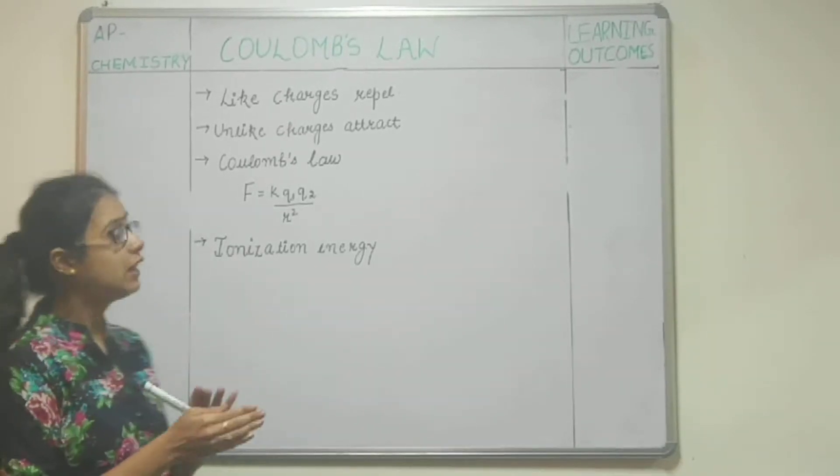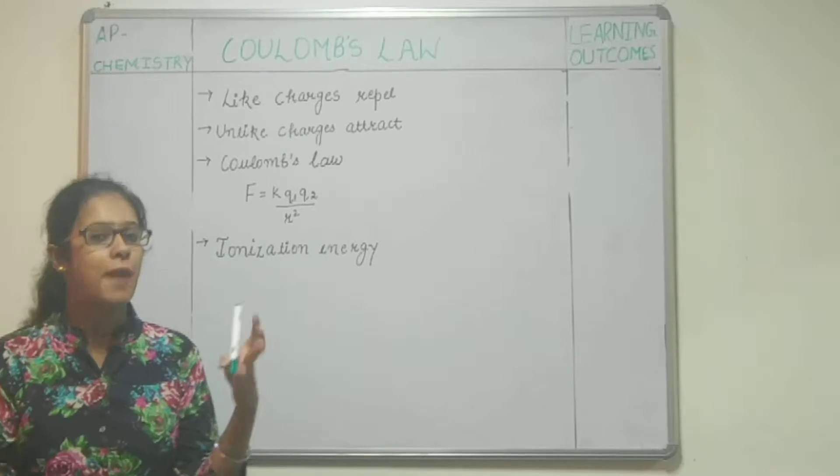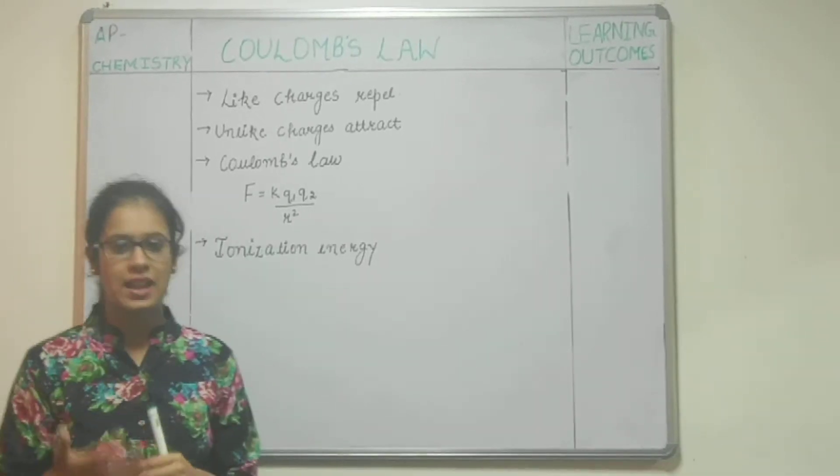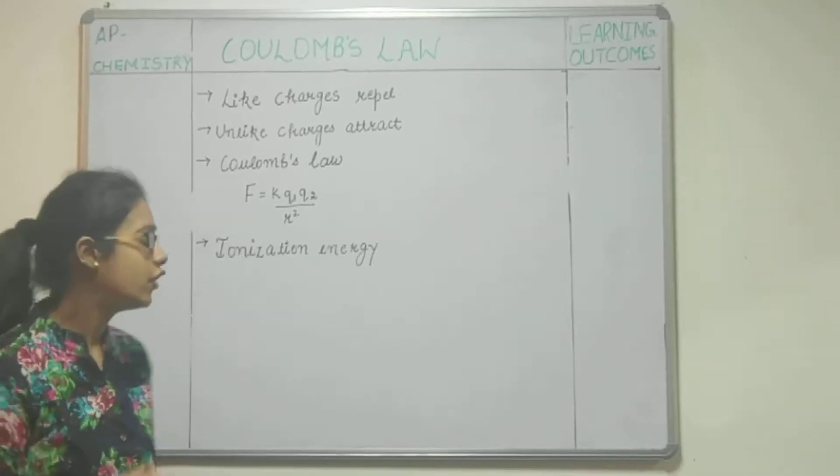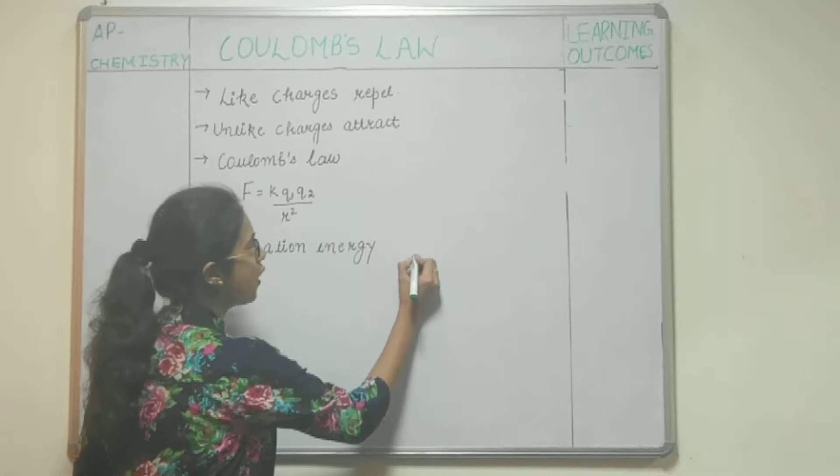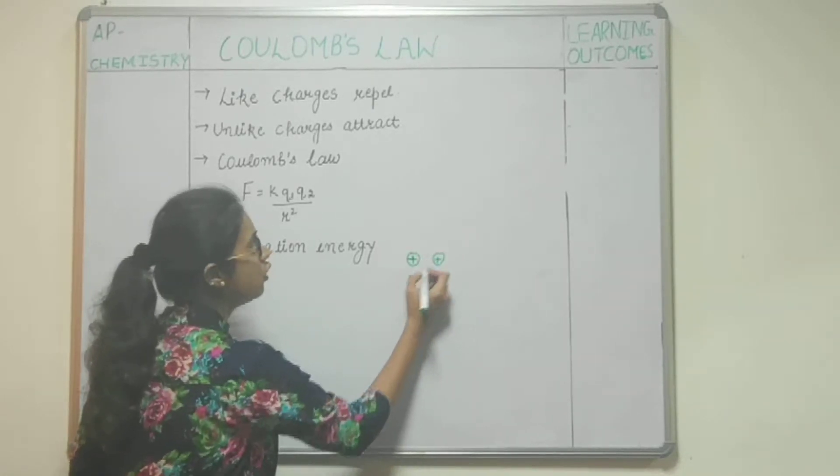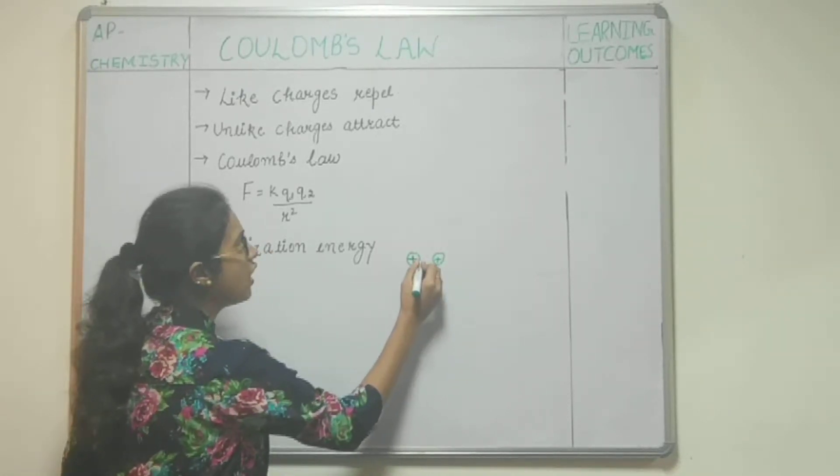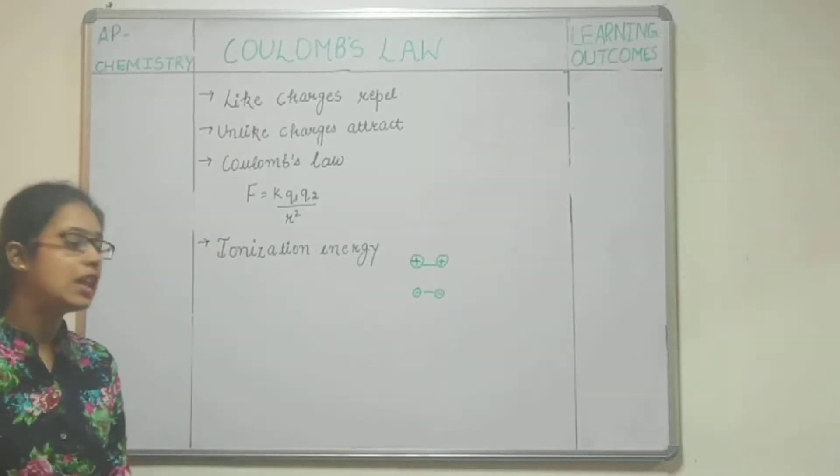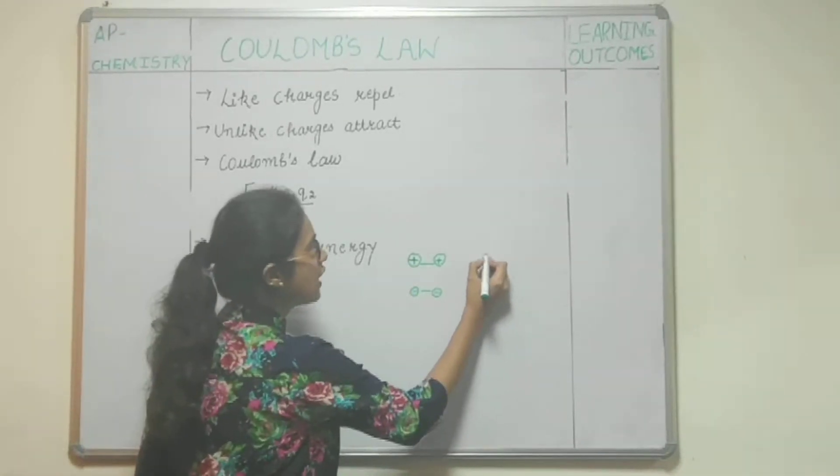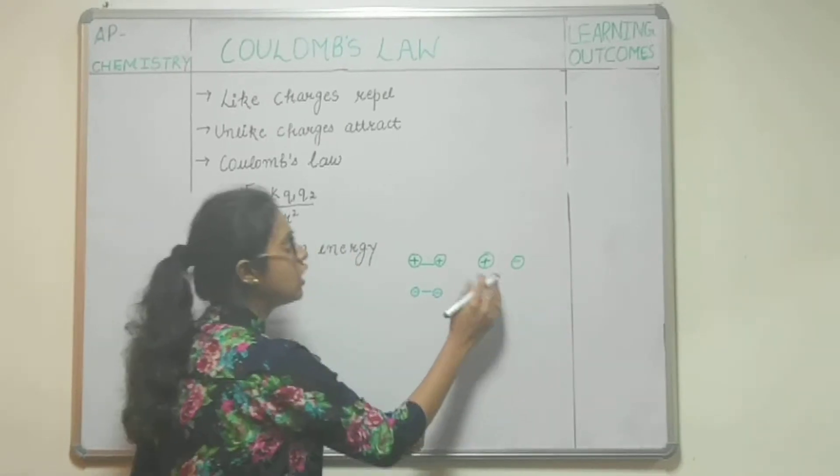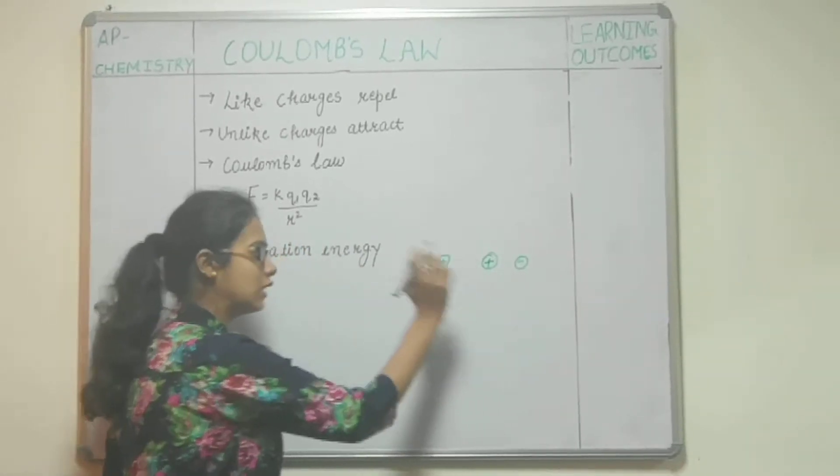As we know, like charges repel each other and unlike charges attract each other. For example, if there are two positive charges or two negative charges, they will repel. But if there is one positive charge and one negative charge, they will attract each other.